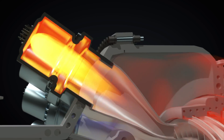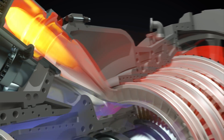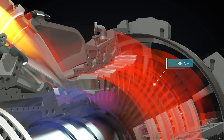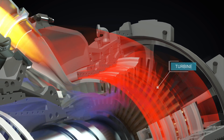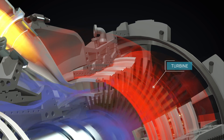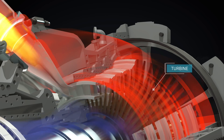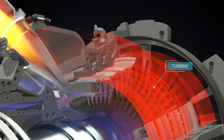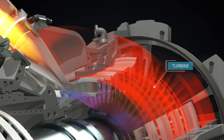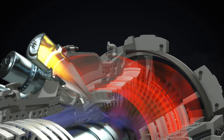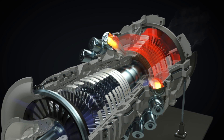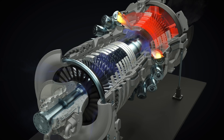The next step is the expansion. The hot gases from the combustion process flow through the turbine section. The stationary blades align the gas flow and help reduce turbulence. As the hot gases pass over the rotor blades, they cause the blades to rotate. This rotation is used to drive the compressor and an external load, such as a generator.